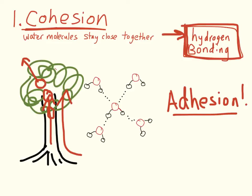Adhesion, which is the cling between two different substances, also plays a role in this. Here, water is able to cling to the cell walls by hydrogen bonding, and this also helps counter the pull of gravity.